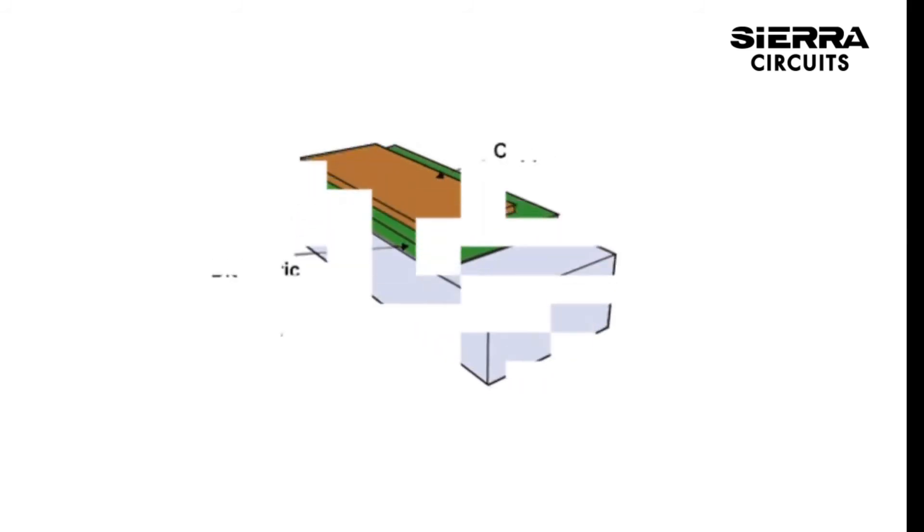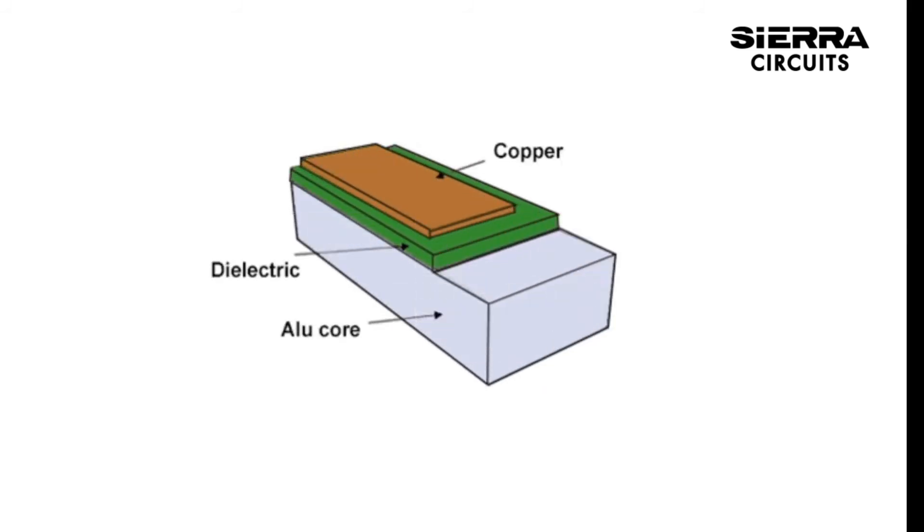Metal core boards transfer heat eight to nine times faster than FR4 PCBs. Such metal core laminates keep the heat generating components cooler by dissipating heat at a faster rate, aiding effective thermal management.